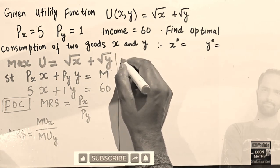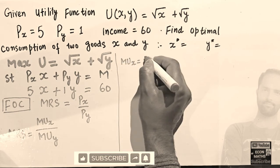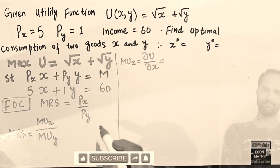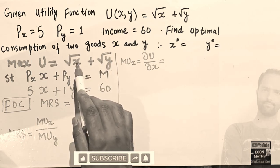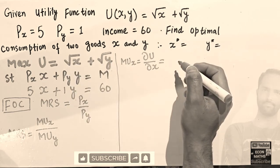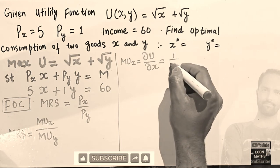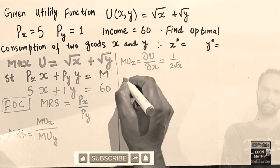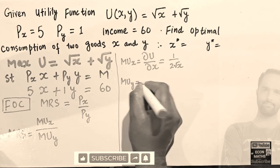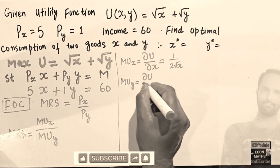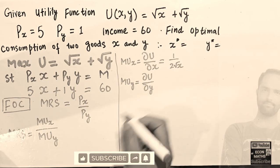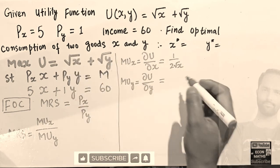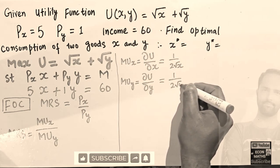The marginal utility of x is the partial derivative of the utility function with respect to x. The derivative of √x is 1/(2√x). Similarly, the marginal utility of good y is the partial derivative with respect to y. The derivative of the x term is 0, and the derivative of √y is 1/(2√y).